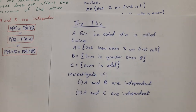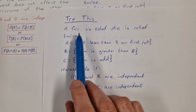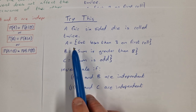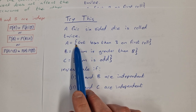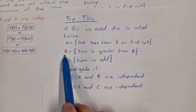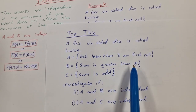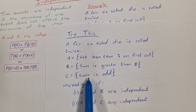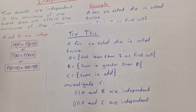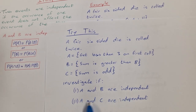Here's one for you to try. A fair 6-sided die is rolled twice. A is the event of getting less than 3 on the first roll. B is the event where the sum of the two rolls is greater than 8. And C is the event that the sum is odd. Investigate if A and B are independent and if A and C are independent. See if you can figure it out and write your answers in the comments.